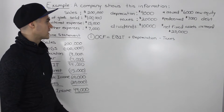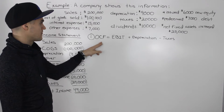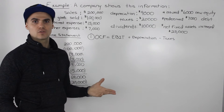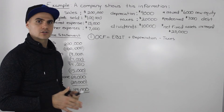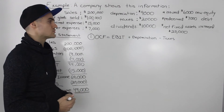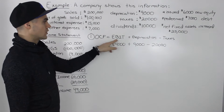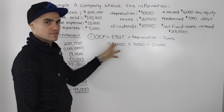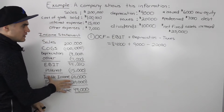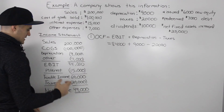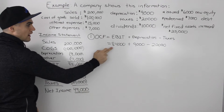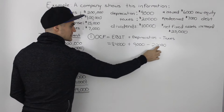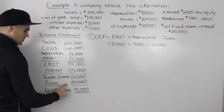The first thing we have to find is operating cash flow, or OCF. The formula for operating cash flow is: OCF equals earnings before interest and taxes plus depreciation minus taxes. These figures we can get smoothly from the income statement. So earnings before interest and taxes is $84,000, plus depreciation of $9,000, minus taxes of $20,000, giving us an OCF of $73,000.